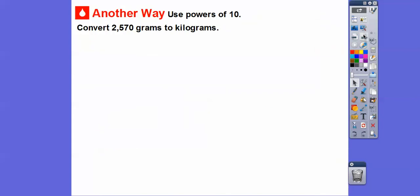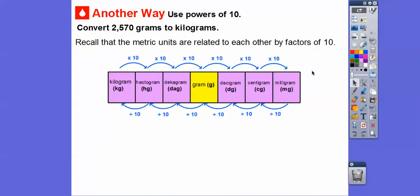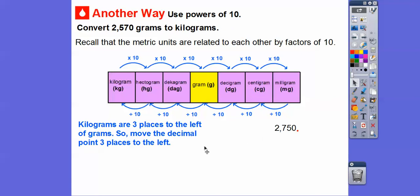Another way is we're going to convert this to kilograms. Remember, the metric system is related by powers of 10. If we want to go from grams to kilograms, kilograms are three places to the left of grams, so we're just going to move the decimal point three places to the left: 1, 2, 3, that's going to put it right there. So it's going to be 2.57, we don't need the 0 part, so 2,750 grams is the same as 2.75 kilograms.